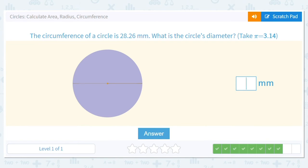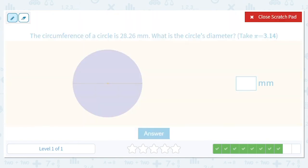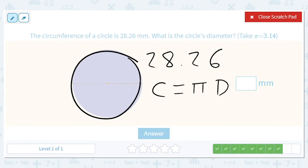The circumference of a circle is 28.26 millimeters. What is the circle's diameter? Okay, so circumference equals πd. So 28.26 equals 3.14 times d. So we're going to divide both sides by 3.14 to get the diameter.